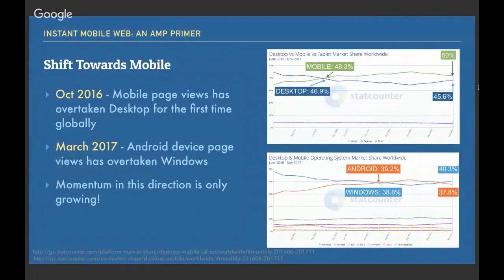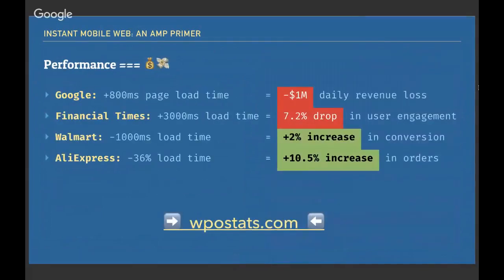Looking at macro trends: in October 2016, mobile page views overtook desktop for the first time. In March of last year, Android device page views overtook Windows. This is significant because even in traditional workplaces running Windows or Mac desktops, there is clear momentum toward viewing and working on mobile rather than desktop.